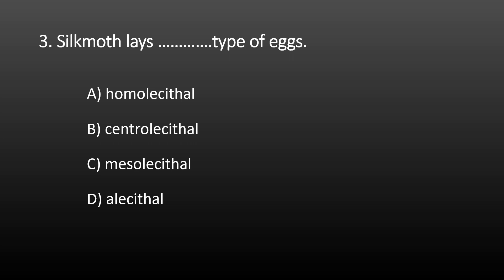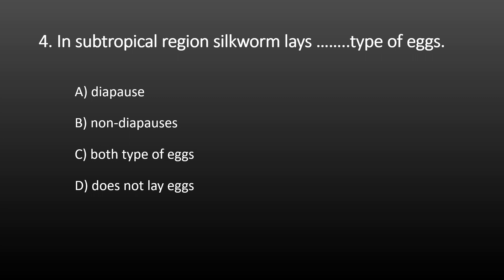Next MCQ: silk moth lays which type of eggs? Options are: A) Pomolecithal, B) Centrolecithal, C) Mesolecithal, and D) Isolecithal. Silk moth lays Centrolecithal type of eggs. The correct option is B, Centrolecithal.